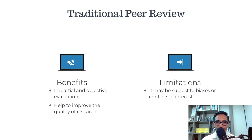Traditional peer review is a process where experts in the field are asked to evaluate the quality and accuracy of research before it is published. The process usually takes place anonymously, with reviewers identified only by their initials or a code. While traditional peer review has been an essential process for ensuring the quality of research for many years, it has some limitations.